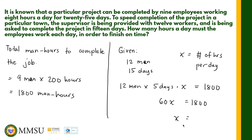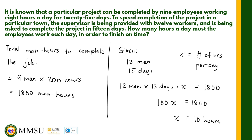We solve for x by dividing both sides by 180: x = 1,800 ÷ 180 = 10. So the workers should work 10 hours per day to complete the job on time. The total man-hours required is 1,800, and with 12 men working 15 days at 10 hours per day, they will meet that requirement. That's it for the work problem.